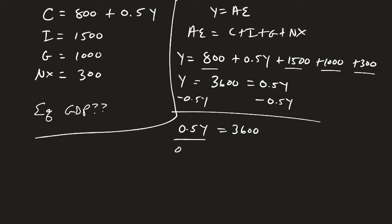Divide both sides by 0.5, divide both sides by 0.5. We'll get our equilibrium level of GDP equal to, we plug that into our calculators, and we'll get 7200.